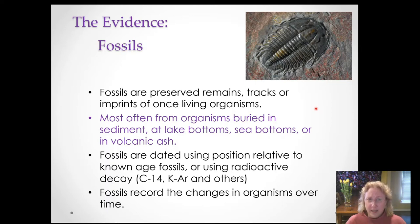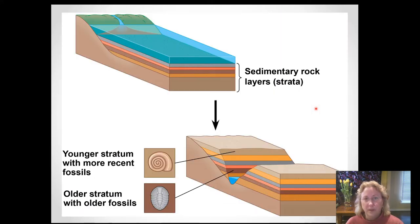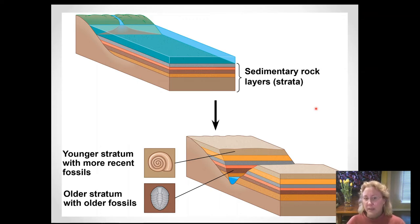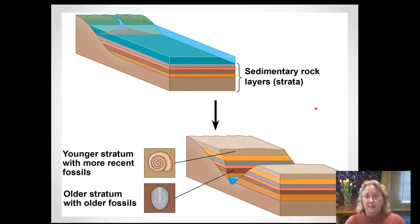What we can see in the fossil record is the change in what living things existed at different time periods in Earth's history. Older things are generally in the lower rock layers, younger things in the higher rock layers. We primarily look for fossils in sedimentary rocks — things like sandstone, shale, and limestone — because that would be the preservation of things slowly buried at the bottom of a body of water.